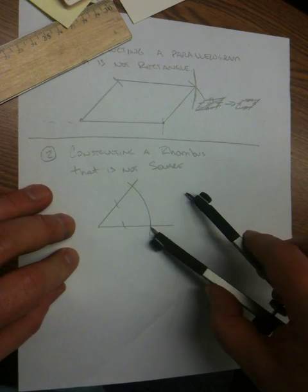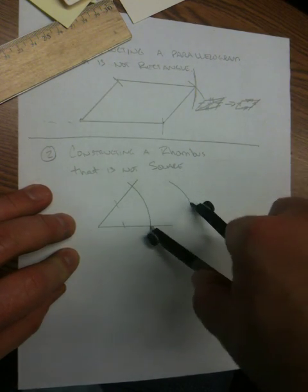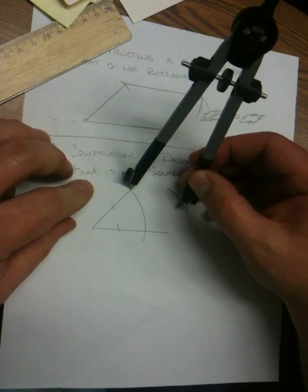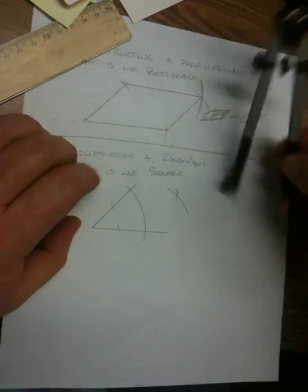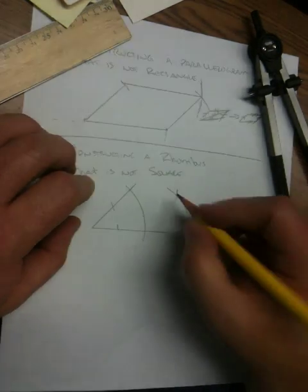By then coming to the point of intersection and making an arc, and that same length from the other point of intersection, I produce another point of intersection.